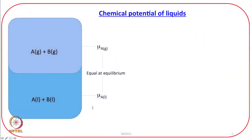Let us take a look at the figure. If liquid A is in equilibrium with its vapor in an enclosed container, then at equilibrium the chemical potential of A in the liquid form will be equal to the chemical potential of A in the vapor form.